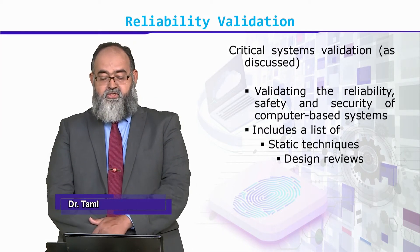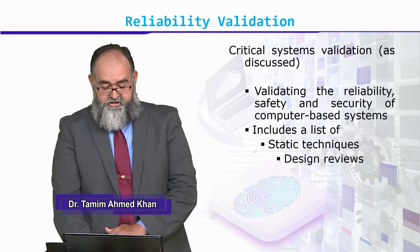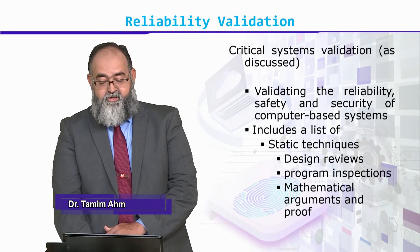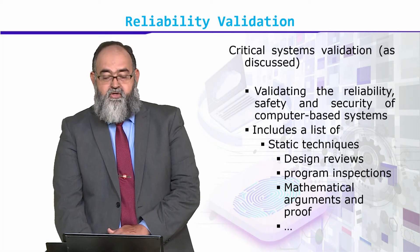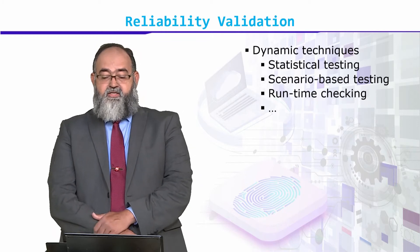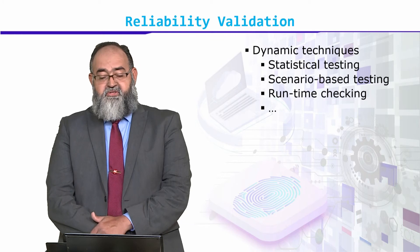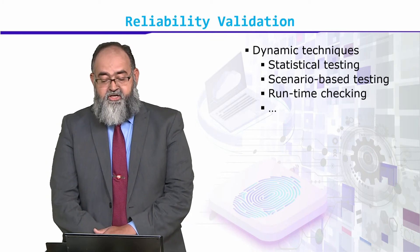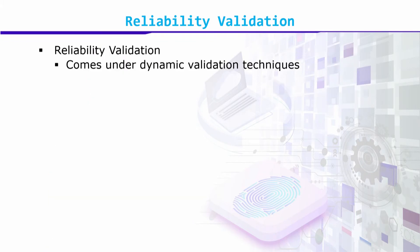Critical systems validation includes a list of static techniques such as design reviews, program inspections, mathematical arguments and proofs, as well as dynamic techniques which include statistical testing, scenario-based testing, runtime checking, etc. Reliability validation comes under dynamic validation techniques.